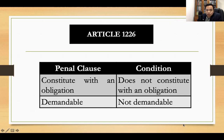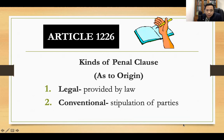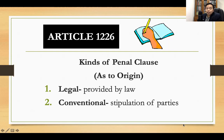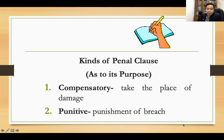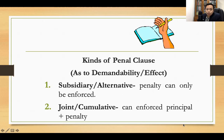We distinguish between penal clause and condition. A penal clause is constituted with an obligation, whereas a condition does not constitute with an obligation. A penal clause is demandable and a condition is not demandable. As to origin, a penal clause can be legal — provided by law — or conventional — by stipulation of the parties. As to purpose, it can be compensatory, taking the place of damages, or punitive, as a punishment for breach. As to demandability, a subsidiary or alternative penal clause means the penalty can only be enforced alone, while a joint cumulative can be enforced together with the principal plus the penalty.